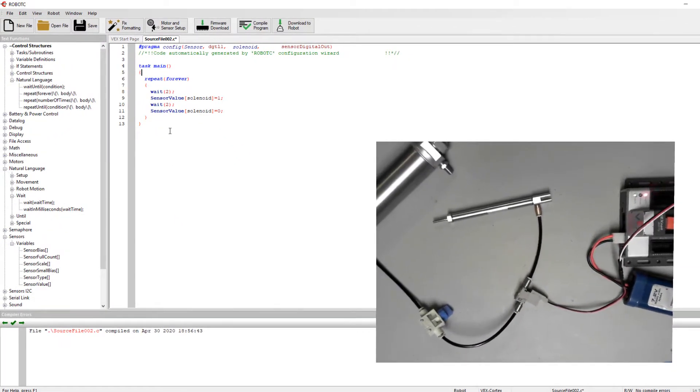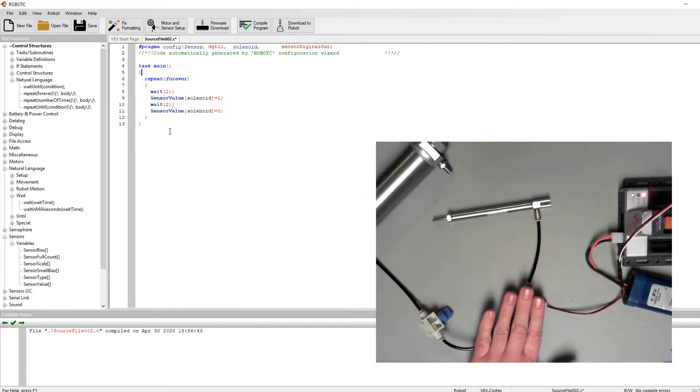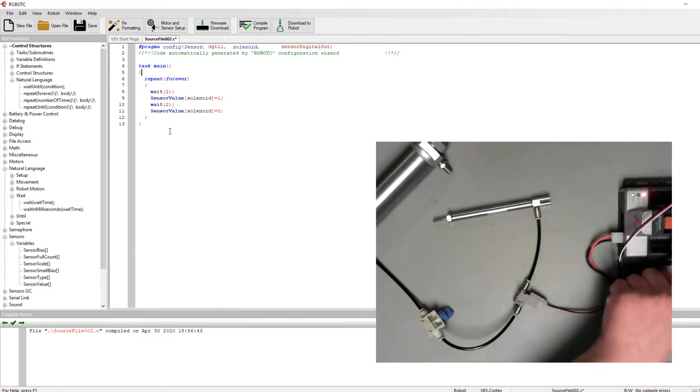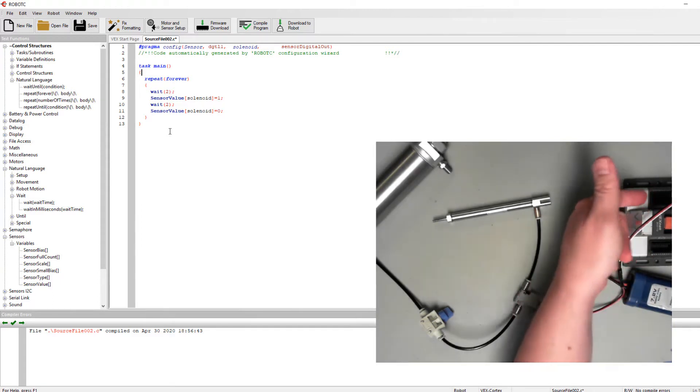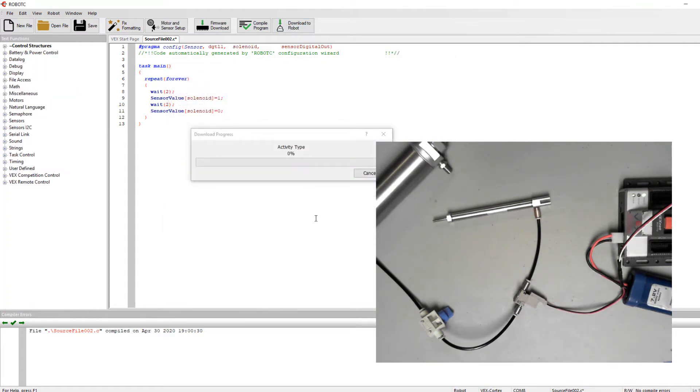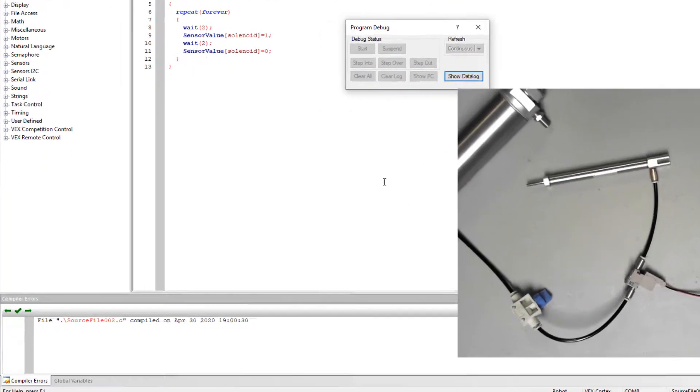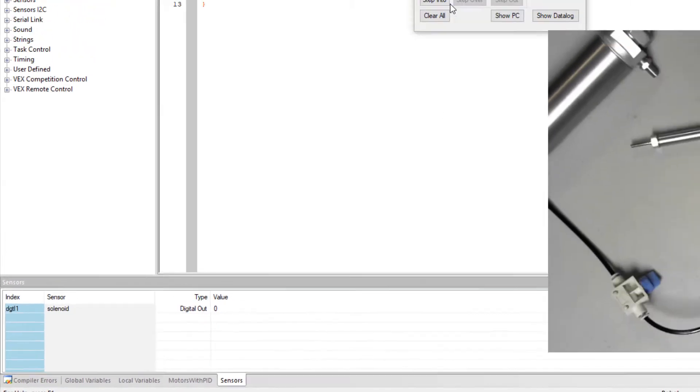So let's make sure we have everything set up. My shutoff valve is open. I have air inside the tank. My solenoid is set up, and it's plugged in. I'm in digital 1. I have communication with the cortex, and all I need to do is turn the power on for my battery. I have green lights on both. I'll go ahead and download to the robot. And I can see down here in my debugger window that my initial value should start off as a zero. And we'll hit start.